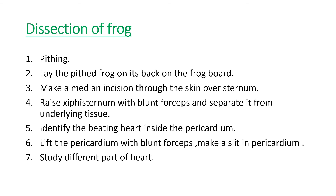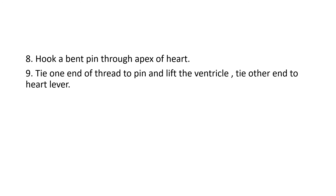For dissection of the frog, the first step is pithing. Then lay the pithed frog on its back on the frog board. Make a median incision through the skin and sternum, then raise the xiphisternum with blunt forceps and separate it from the underlying tissue. Remove the bone, identify the beating heart inside the pericardium, lift the pericardium with blunt forceps, make a slit in the pericardium, and study the different parts of the heart. When you identify the ventricle, hook a bent pin into the apex of the ventricle, tie one end of the thread to the pin, lift the ventricle, and tie the other end to the Starling's heart lever.